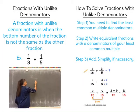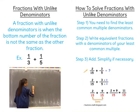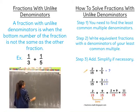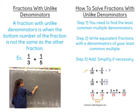The first problem is one-third plus one-fifth. So what you want to do is find the least common multiple, which is fifteen.